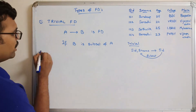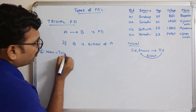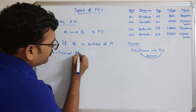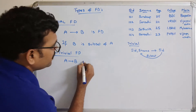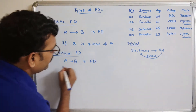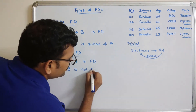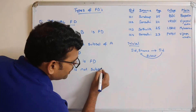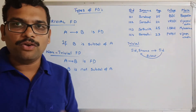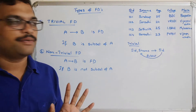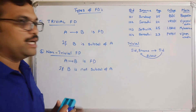The second type is non-trivial functional dependency — quite opposite to trivial. A tends to B is functionally dependent if B is NOT a subset of A. That means whatever dependents we have, those should not be a subset of the determinants. Such a functional dependency is called non-trivial functional dependency.